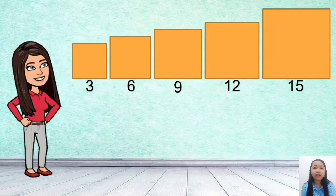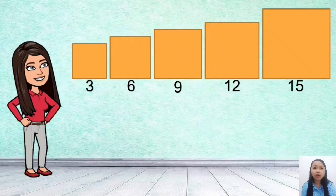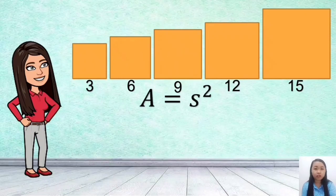The third tile has a side of 9, the fourth measures 12, and the biggest tile measures 15. Based on the problem, we are asked to find the area of a square. The area of a square is found by multiplying the sides, or getting the square of its sides. In symbol, the area a is equal to s squared.